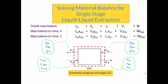We're going to represent our feed stream and label it as L0. We're going to label our solvent stream as V2, the raffinate stream as L1, and the extract stream as V1. These are the four streams that we have — two inlets and two outlets.